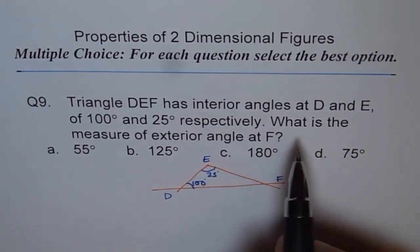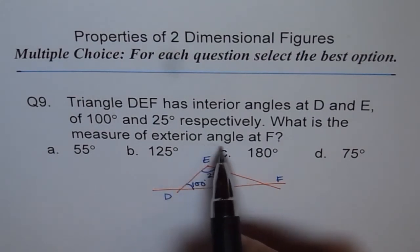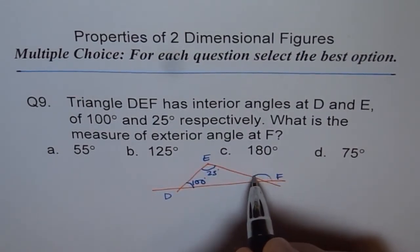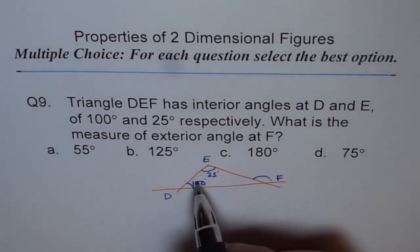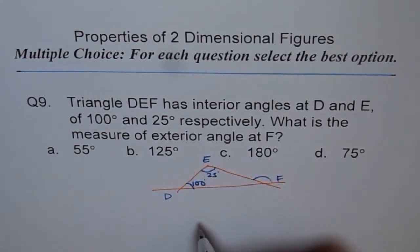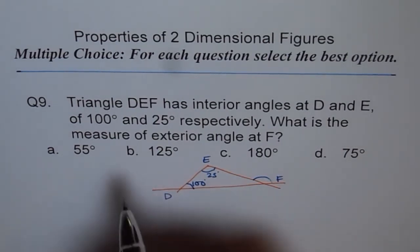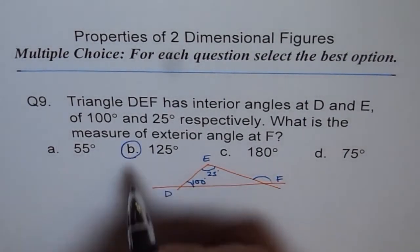Then what is the measure of the exterior angle at F? This measure, right? Now this measure is the sum of the two interior angles on the other side. So therefore, the answer is B, 125.